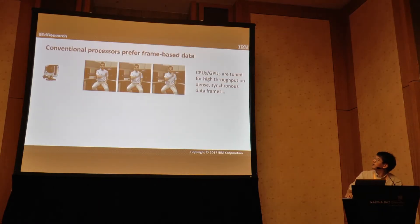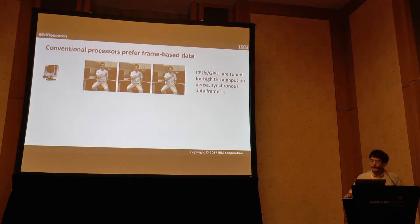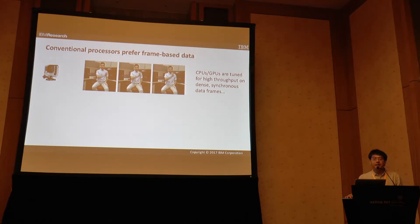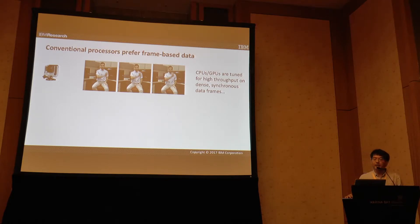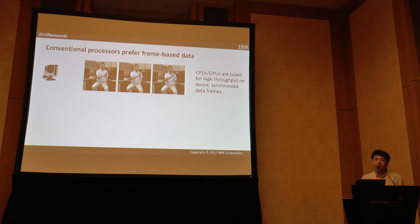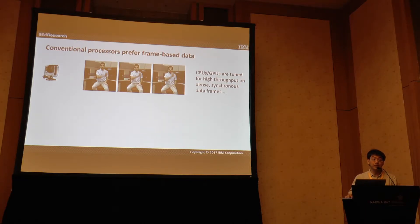Toby and Yoel both mentioned that conventional processors are really inclined to want frame-based data. If you look at a GPU or a CPU, they're trying to get their arithmetic intensity, and they're willing to sacrifice redundant data and redundant operations as the price they pay to keep those pipelines full.